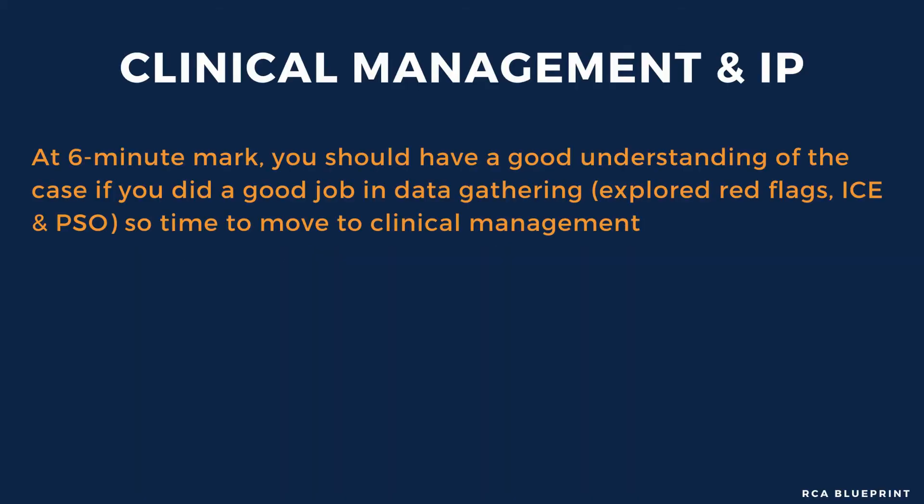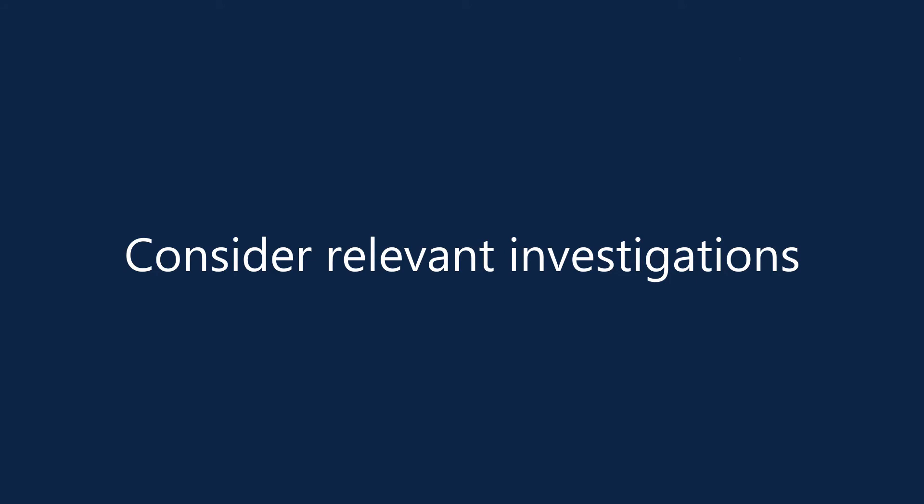Once you're happy with data gathering, move into clinical management — this should be done by minute 6 or 7. What investigations would you request? You may want to do an ECG to exclude any arrhythmia or atrial fibrillation. You may want to do blood tests such as full blood count, U&Es, LFTs, TFTs, lipids, and fasting glucose. Patients with suspected TIA need further investigation in secondary care, so they may need an ultrasound scan of the carotid artery and brain imaging.